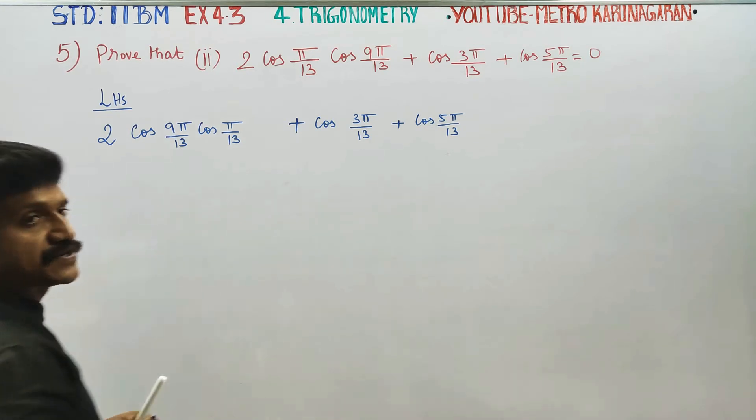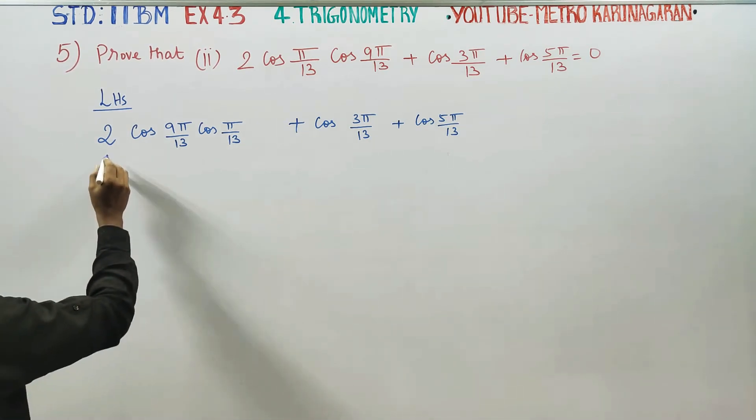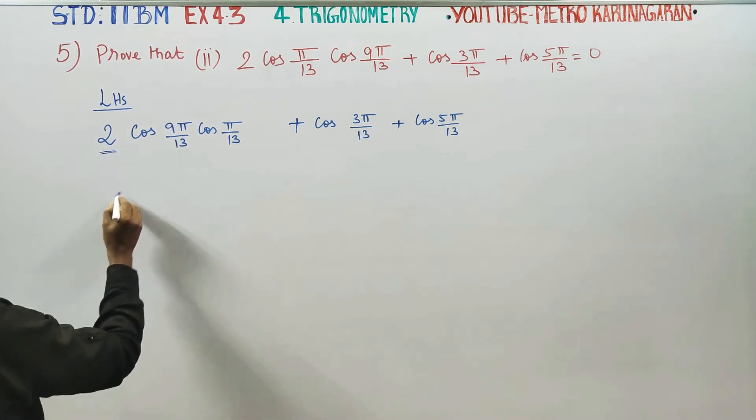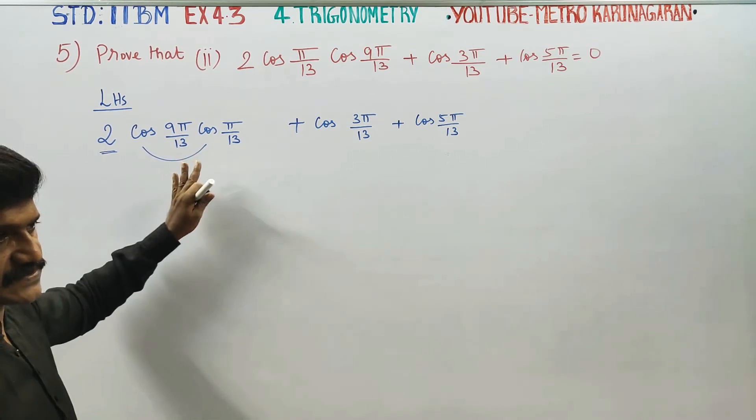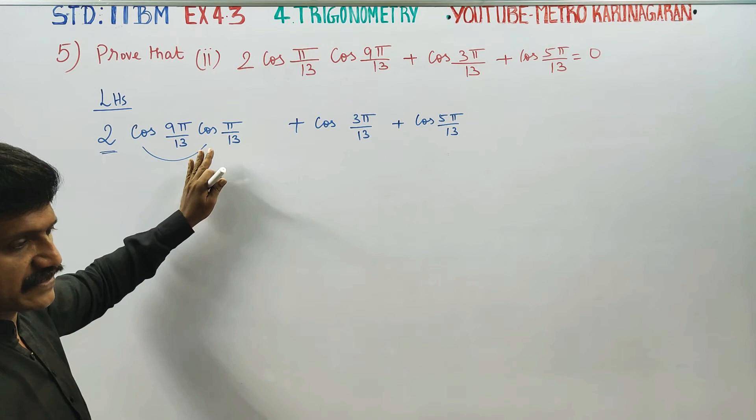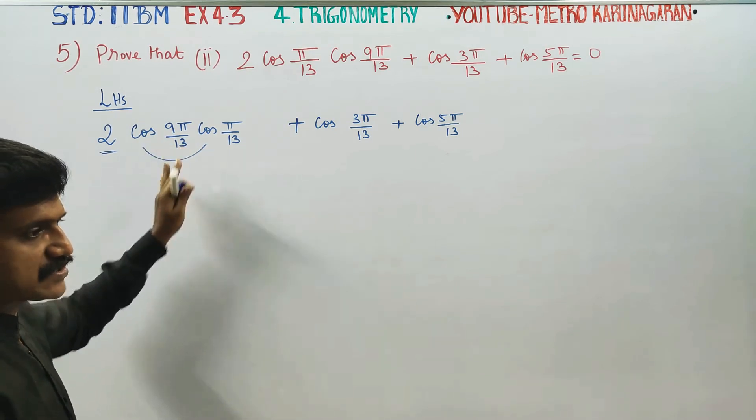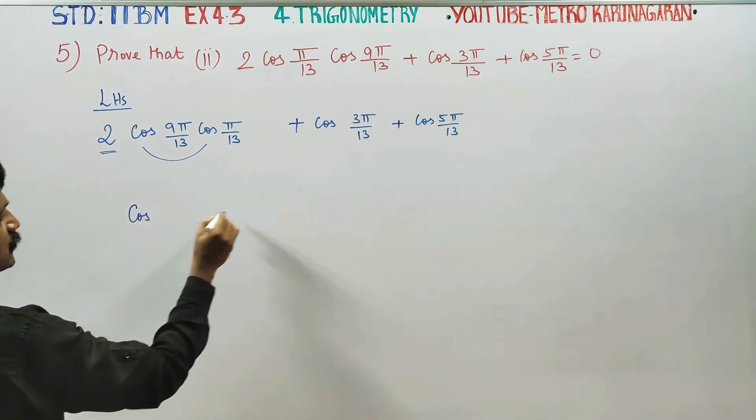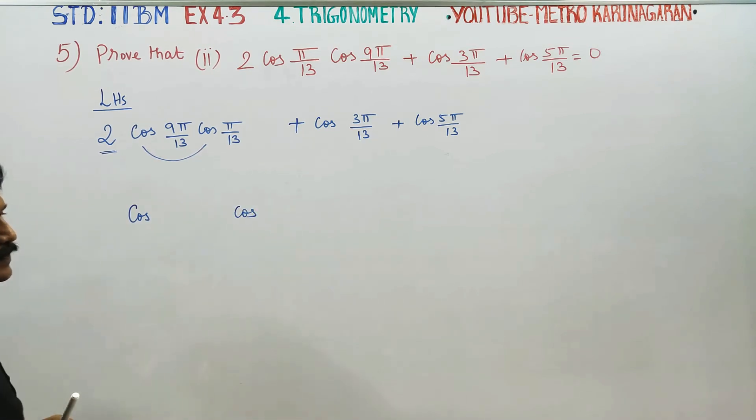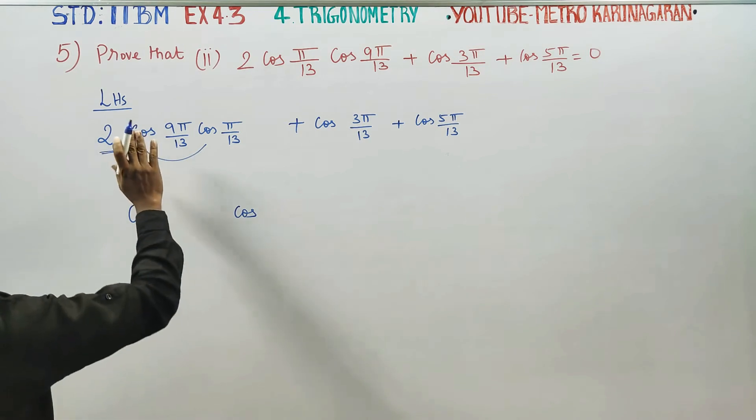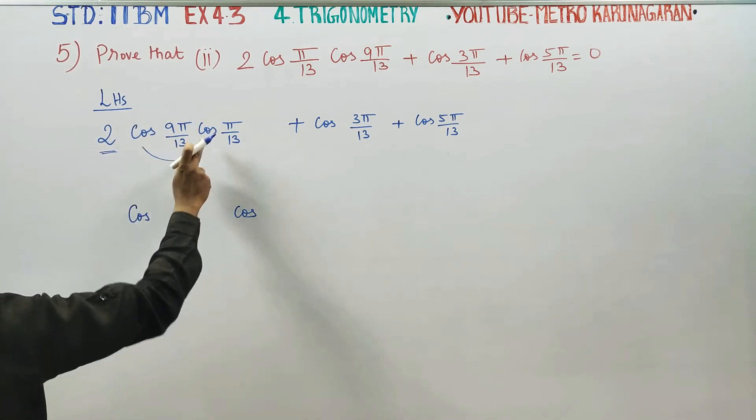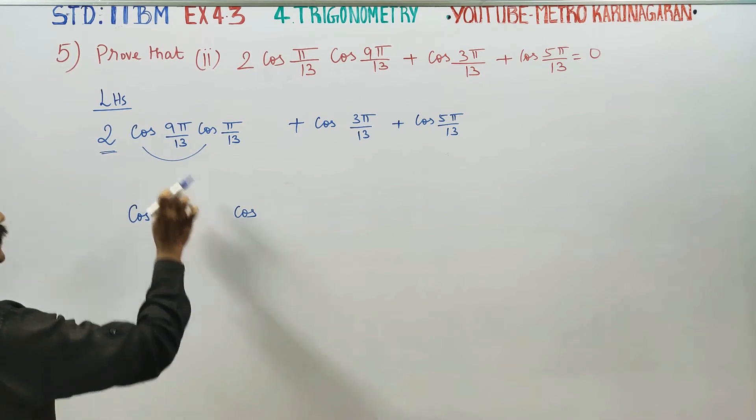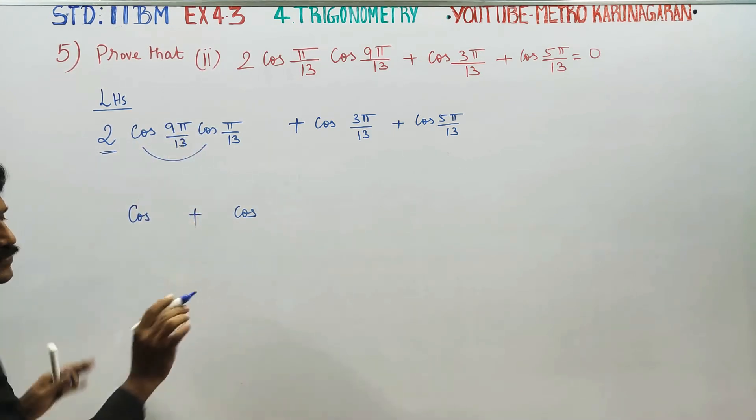Next stage, you can see two times one part. Cos cos, sin sin, cos formula. Here is cos, here is cos, here is cos. Cos cos, that is the case. Two times cos cos. You can see, sin sin is minus, cos cos is plus.